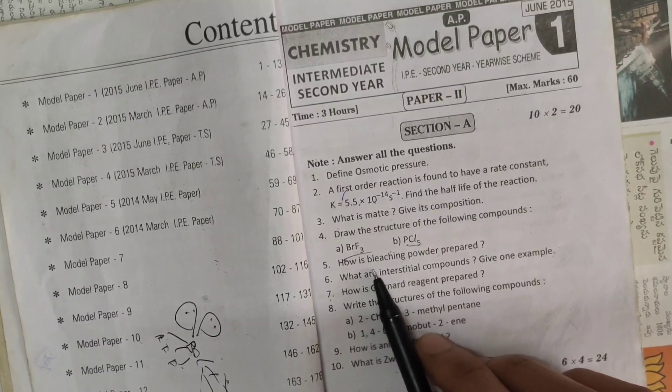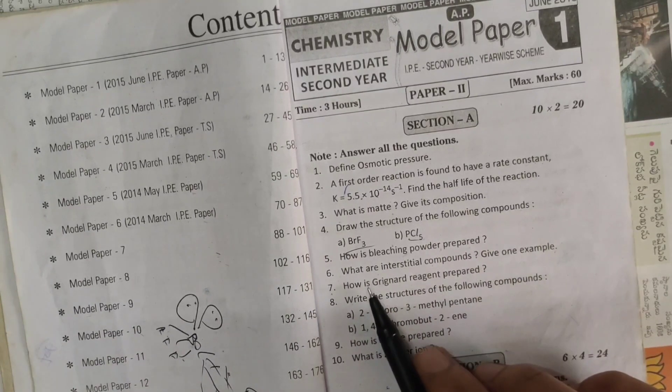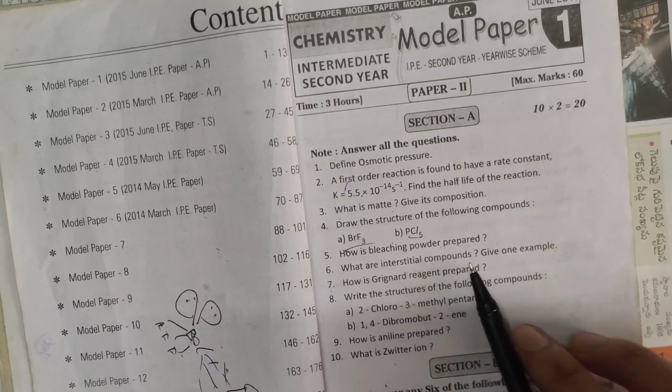Next one, how is bleaching powder prepared? And next one, sixth one, what are interstitial compounds, give one example.